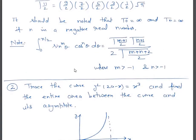We shall be using this formula very often, so please remember it: ∫₀^{π/2} sinᵐθ cosⁿθ dθ = [Γ((m+1)/2) · Γ((n+1)/2)] / [2 · Γ((m+n+2)/2)], where m > -1 and n > -1. Remember this formula is applicable only when the limits are from 0 to π/2.